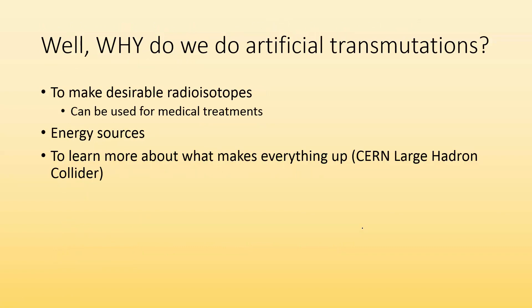Why do we do artificial transmutations? First, we want to make desirable radioisotopes. There are a lot used in medical treatments, so we may be trying to make a specific new isotope, and the only way to do it is artificially. We can't find it in nature. We can also use these artificial transmutations as energy sources. We can use uranium, introduce neutrons, and get a nuclear chain reaction going to power an energy plant.